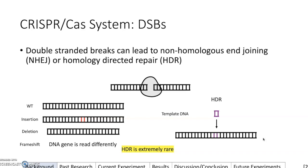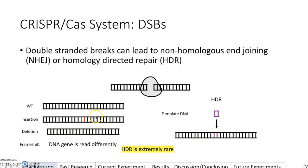You could also have homology-directed repair, or HDR. This is when, after a double-stranded break, you introduce the DNA template that you want inserted. As shown in the figure, you have a template DNA shown in purple — after a double-stranded break, you introduce that template DNA and it gets inserted into the DNA sequence. However, HDR is very rare, because most of the time you end up with indels or frameshift mutations instead.